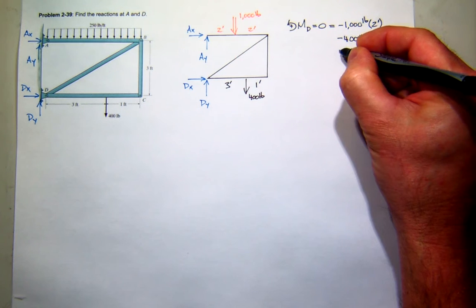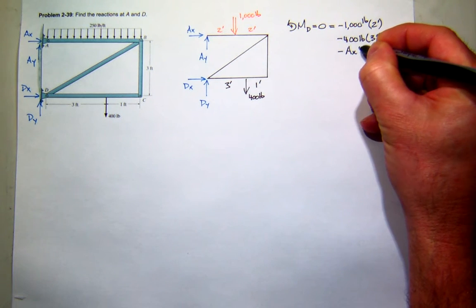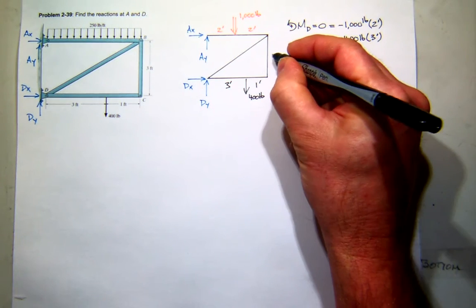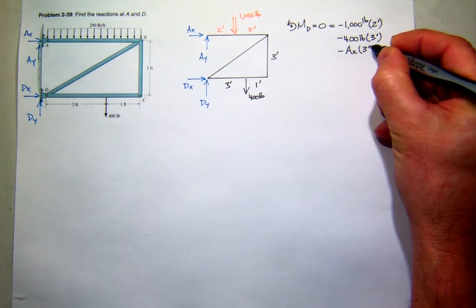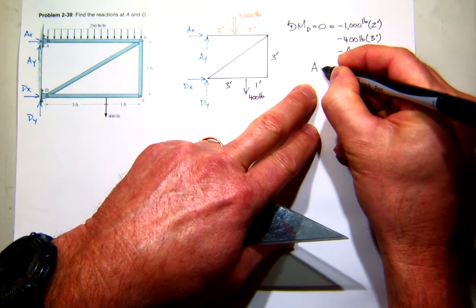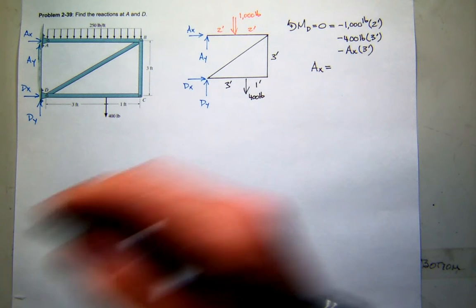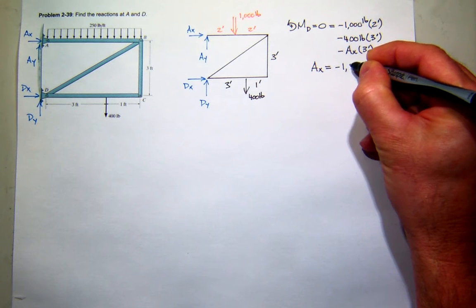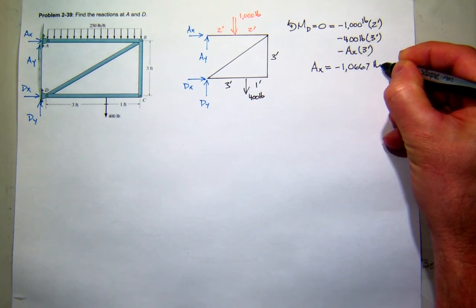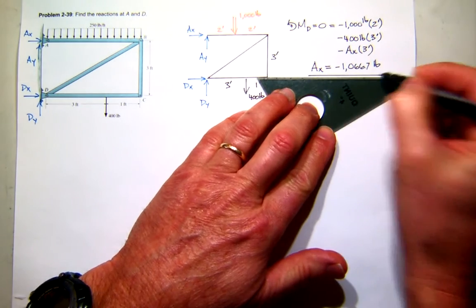And it has a moment arm of the height, which I didn't write, which is 3. So we should be able to solve for Ax. Is it 500? No. 1066.7, something like that? You guys get that? And it should be negative. Thank you. So 1066.7 pounds. One down, three to go, right?